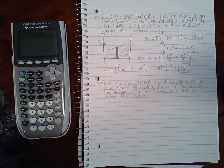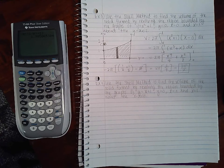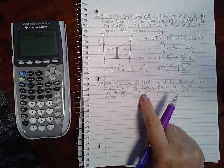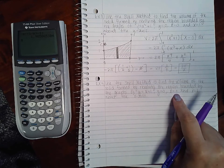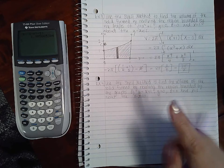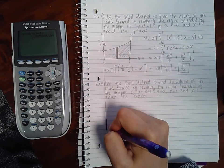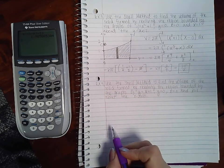Again, it says use the shell method to find the volume of a solid formed by revolving the region bounded by the graphs of y equals x plus 1, y equals 0, x equals 0, and x equals 1, about the x-axis. So let's see what that looks like.